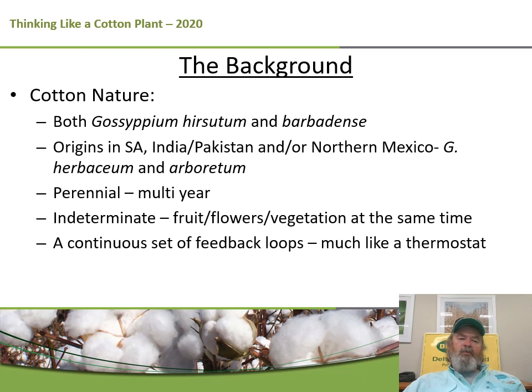When you look into the background of cotton and how it behaves, we really grow two species of cotton in the United States — upland and pima type cottons. The origins of cotton are unclear, coming from a variety of places identified over time. But there are a couple of things about cotton that don't change no matter how we manage it or what we do in the breeding process. Number one, it's a perennial plant, meaning it comes back if frost doesn't kill it. It's also an indeterminate plant, which is where the mischief lies in trying to grow cotton.